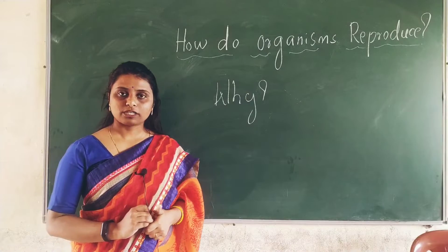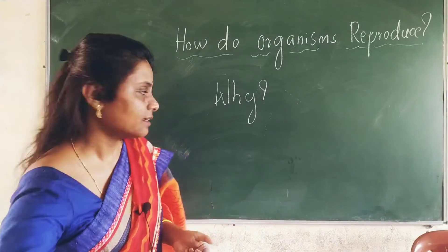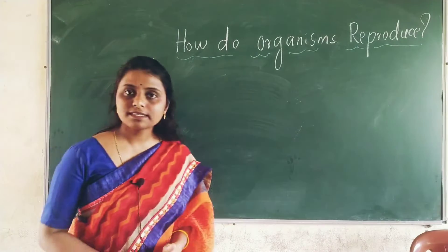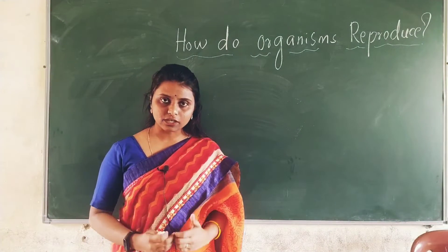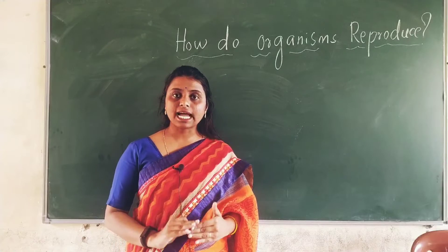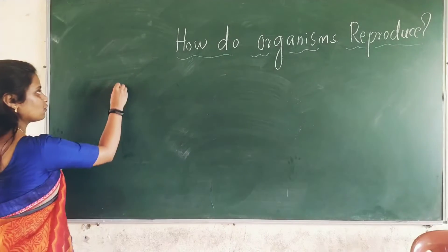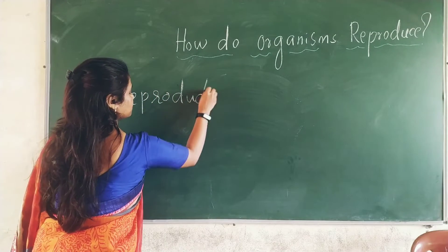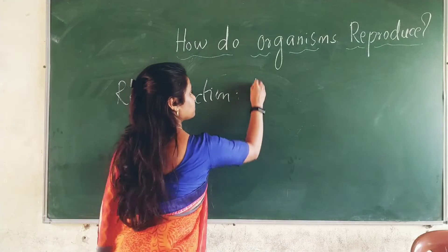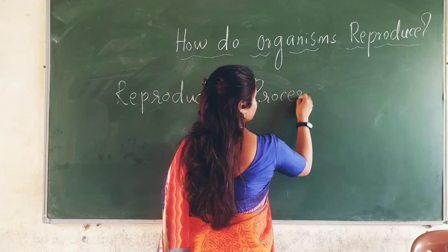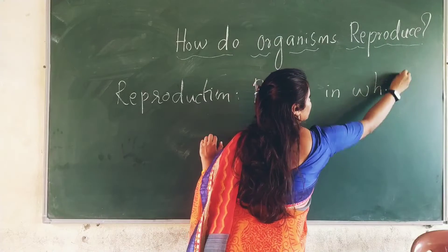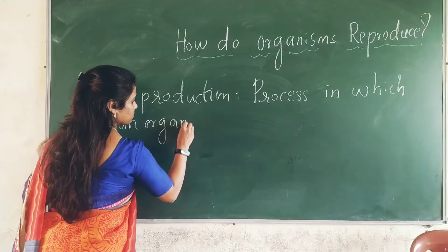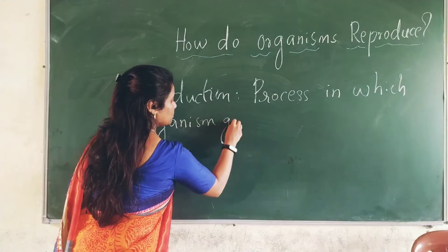So let us learn the definition of reproduction. Reproduction is a process in which organisms give birth to a young one which is morphologically and genetically similar to itself. Let me write the definition for you: reproduction is a process in which an organism gives birth to its young one.